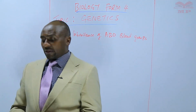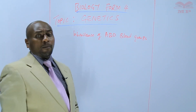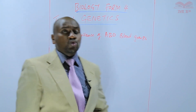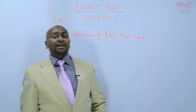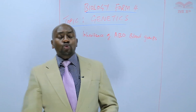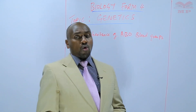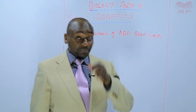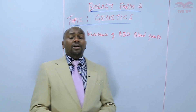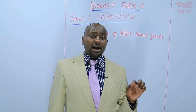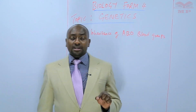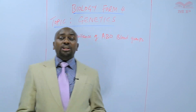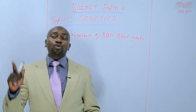When it comes to the blood groups, we have four blood groups. We have blood group A, blood group B, blood group AB, and blood group O. Blood group A and B are as a result of the presence of gene A for blood group A and gene B for blood group B.